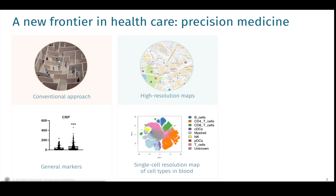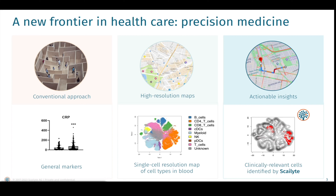New technologies generating very rich data, such as next generation sequencing and multi-omics, provide high resolution biological maps and enable researchers to explore the heterogeneity and complexity of tissues with unprecedented detail. The analysis of this data is still challenging and evolving. Skyvision serves as a GPS through the maze of this very rich single cell data and extracts actionable, sensitive, and specific predictive signatures.